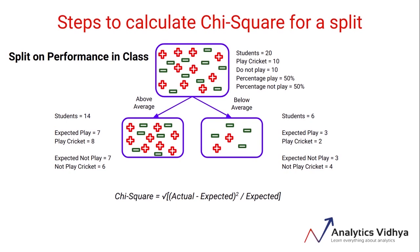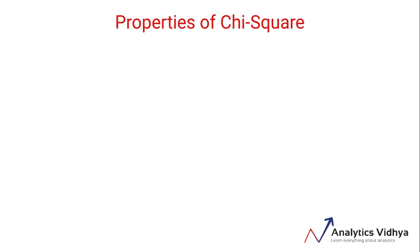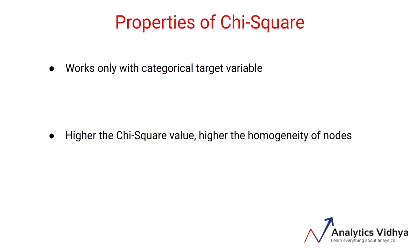Let's look at some of the properties of chi-square before understanding how it actually works. Chi-square, just like Gini impurity, works only with categorical variables, so we cannot use it for continuous targets. A higher value of chi-square means that the sub-nodes are more different from the parent node, and hence the homogeneity is more. You must consider these properties before choosing the right algorithm for deciding the split.